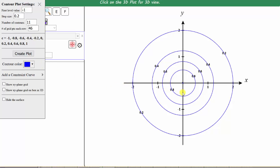And we have our contour plot for the function f of x comma y equals one divided by the quantity one plus x squared plus y squared.